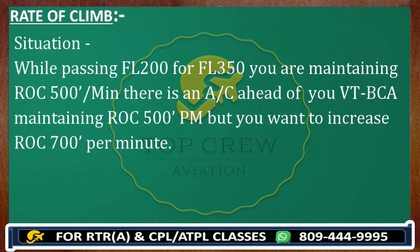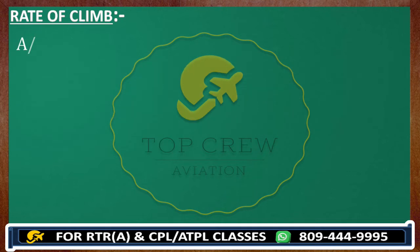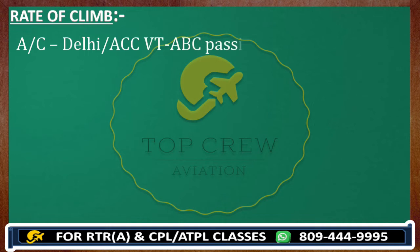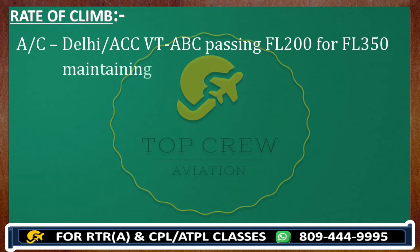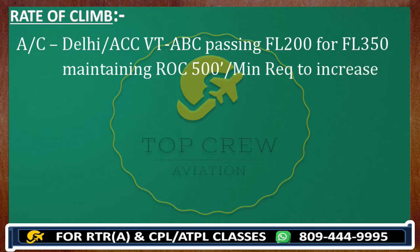If I am behind you and I want to increase the rate of climb, I must first ask you to increase your rate of climb. Once you have done 700 feet, then only I can do it. Otherwise it could be a problem — I cannot increase my rate of climb without first arranging for you to increase yours. So the call would be: Delhi Control, Victor Tango Alpha Bravo Charlie, passing flight level 200 for flight level 350, maintaining rate of climb 500 feet per minute, request to increase rate of climb 700 feet per minute.